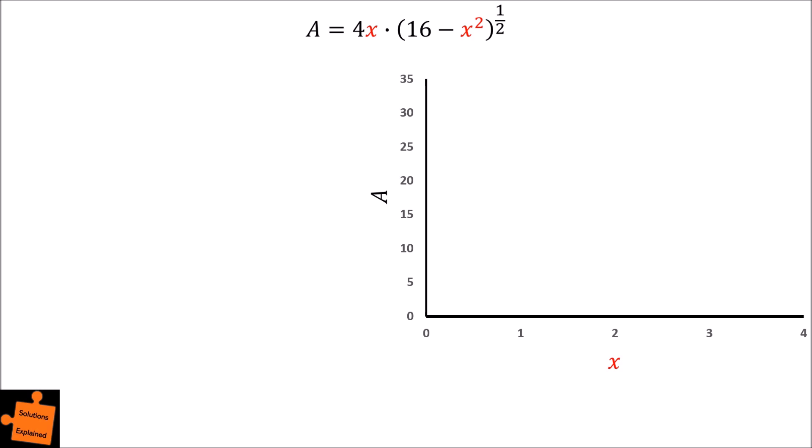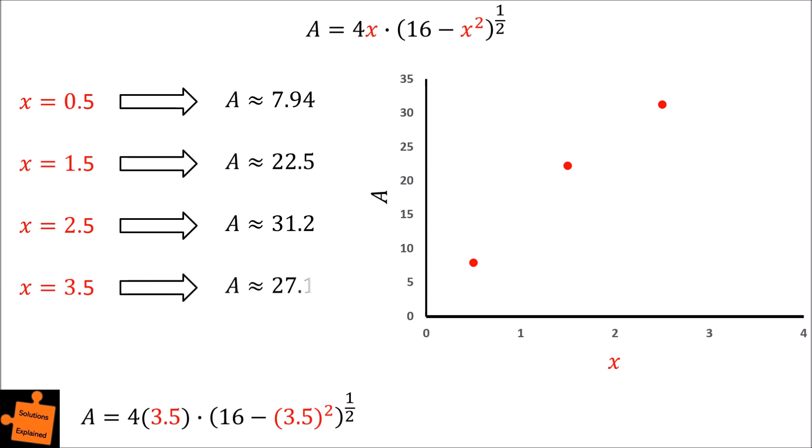If we plug in x is equal to 0.5, we get a value of 7.9 for the area. If we try x is 1.5, we get a value of 22.5 for the area. If we try x is 2.5, we get a value of 31.2 for the area. And finally, if we try x is 3.5, we get a value of 27.1 for the area.